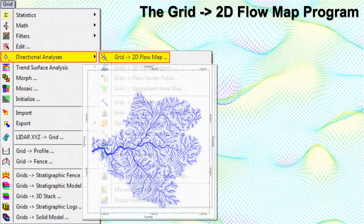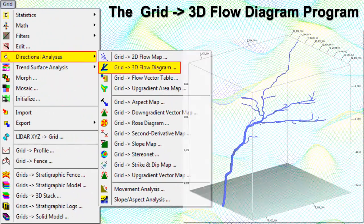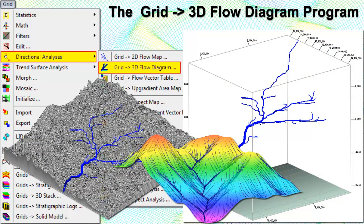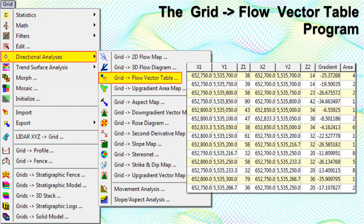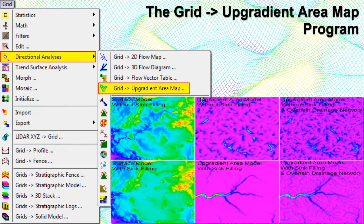The Grid to 2D Flow Map program reads a grid or surface model and creates a 2D map showing flow from high to low nodes with continuous lines, thereby simulating a drainage network. The Grid to 3D Flow Diagram program creates a simulated three-dimensional drainage net based on an existing surface grid model. The Grid to Flow Vector Table program reads a grid, computes flow from high to low nodes, and stores the flow vector segments in a RockWorks Utilities datasheet.